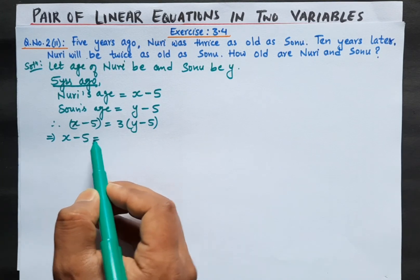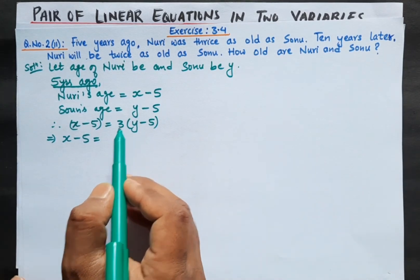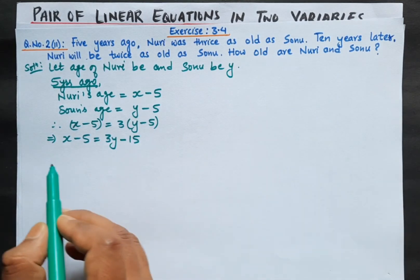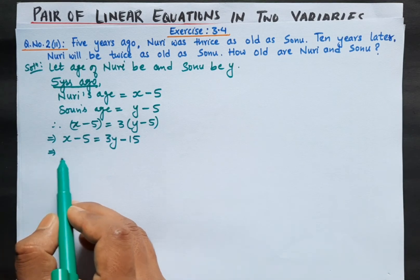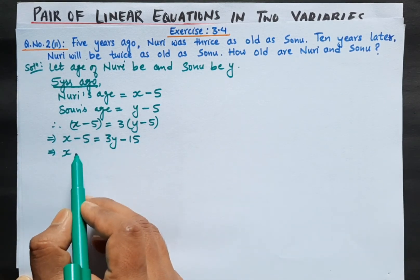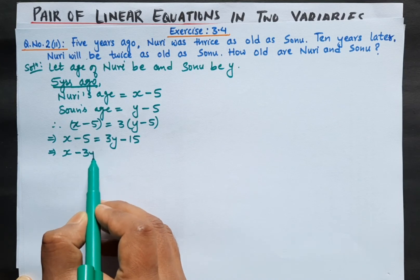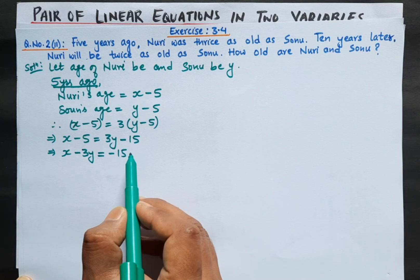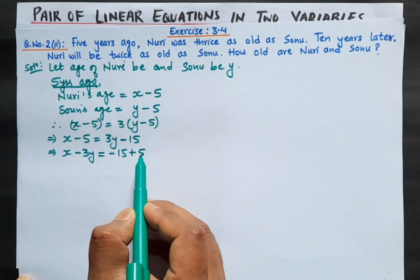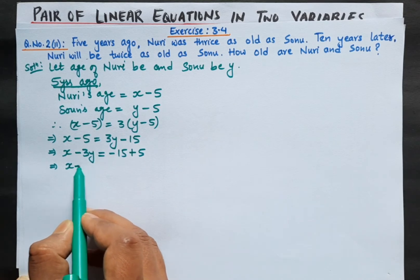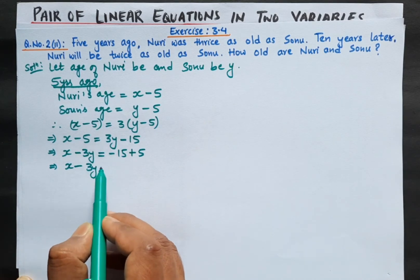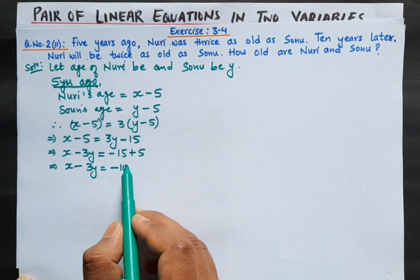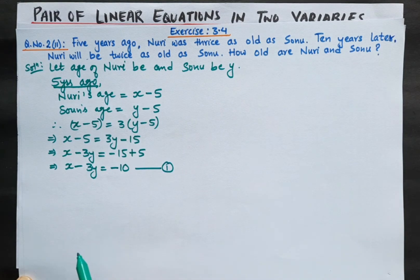Expanding the bracket: x minus 5 equals 3y minus 15. Now bringing variables to the left-hand side: x minus 3y equals minus 15 plus 5, which gives x minus 3y equals minus 10. This is our equation number 1.